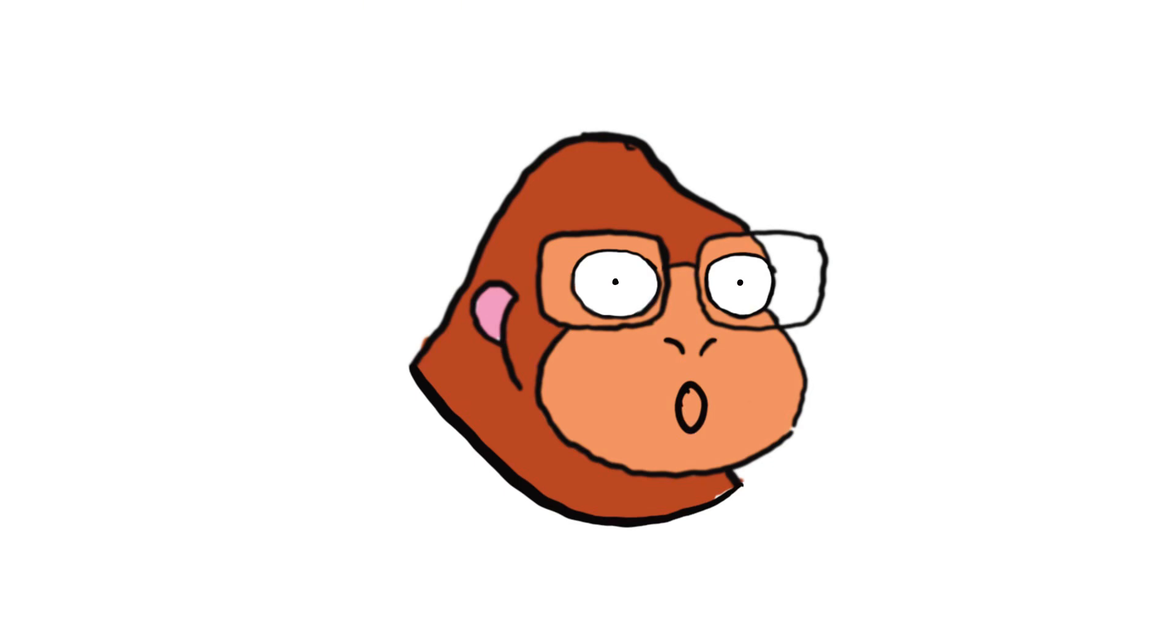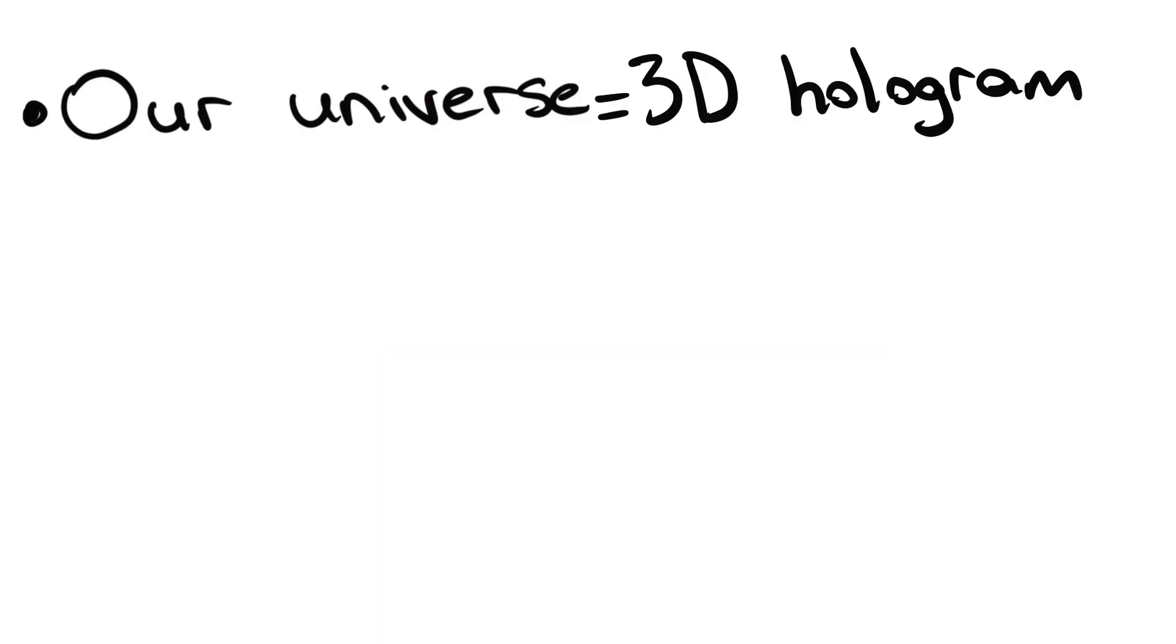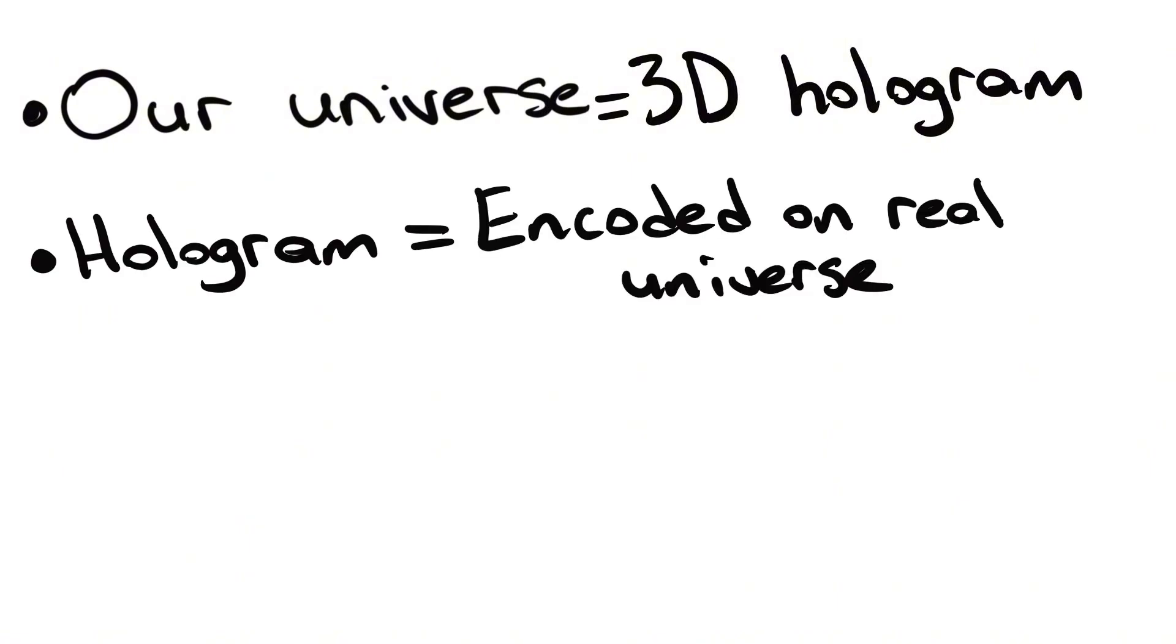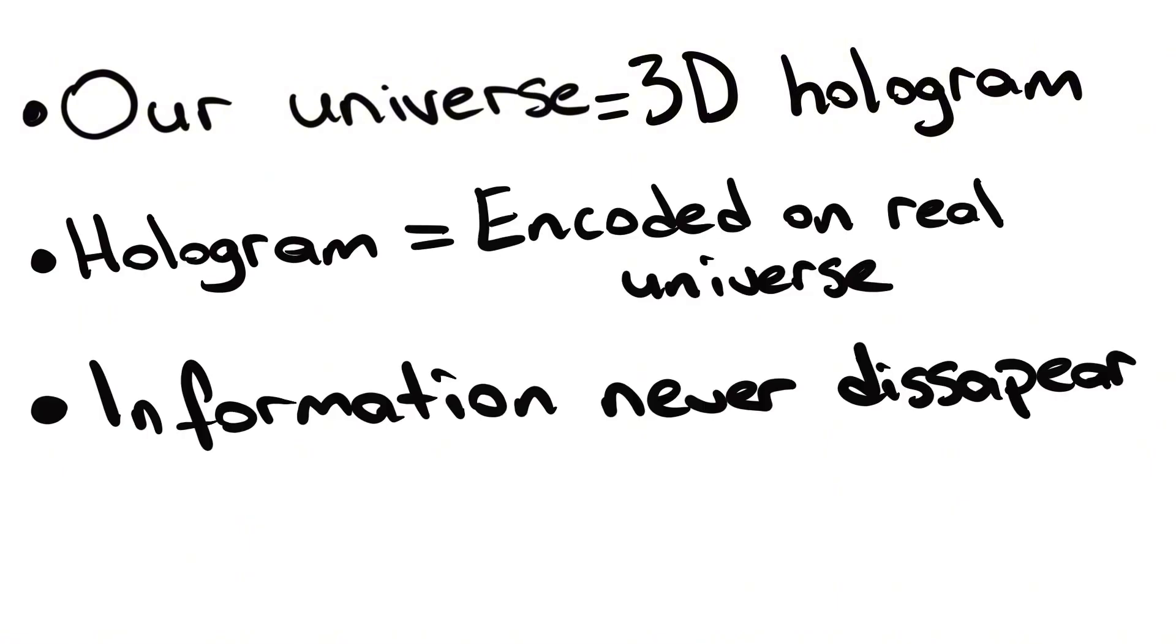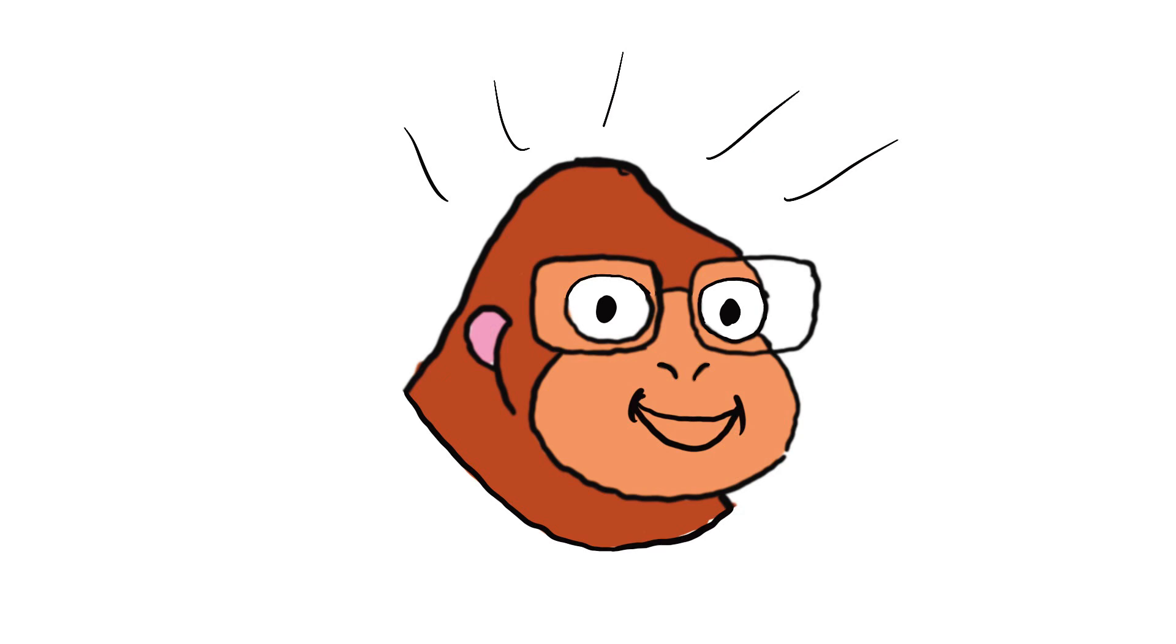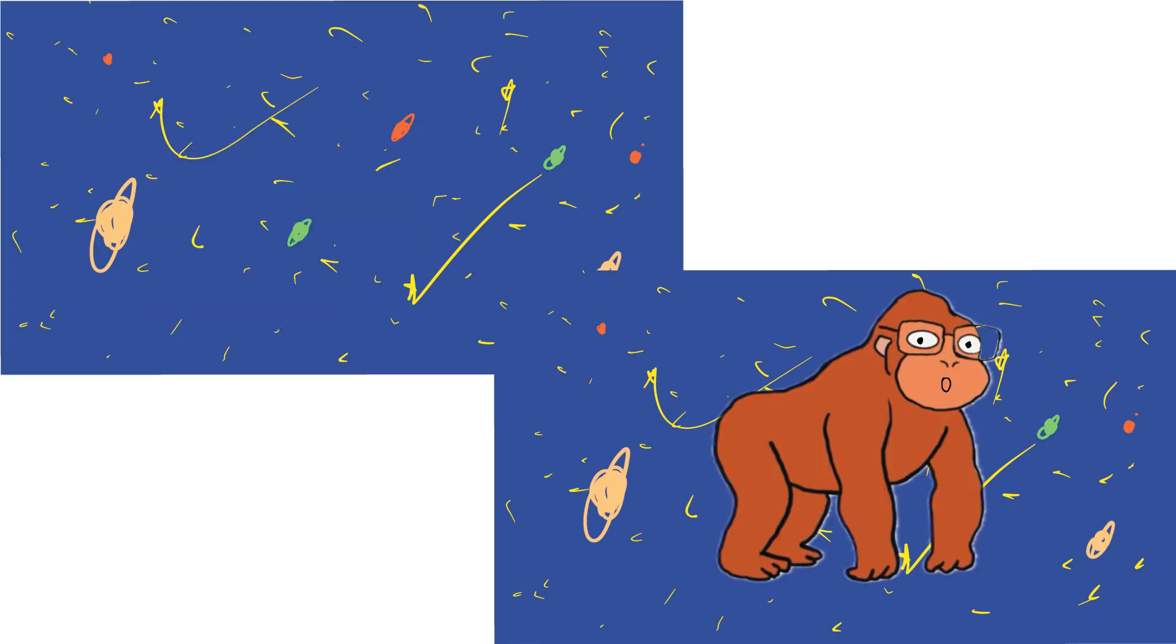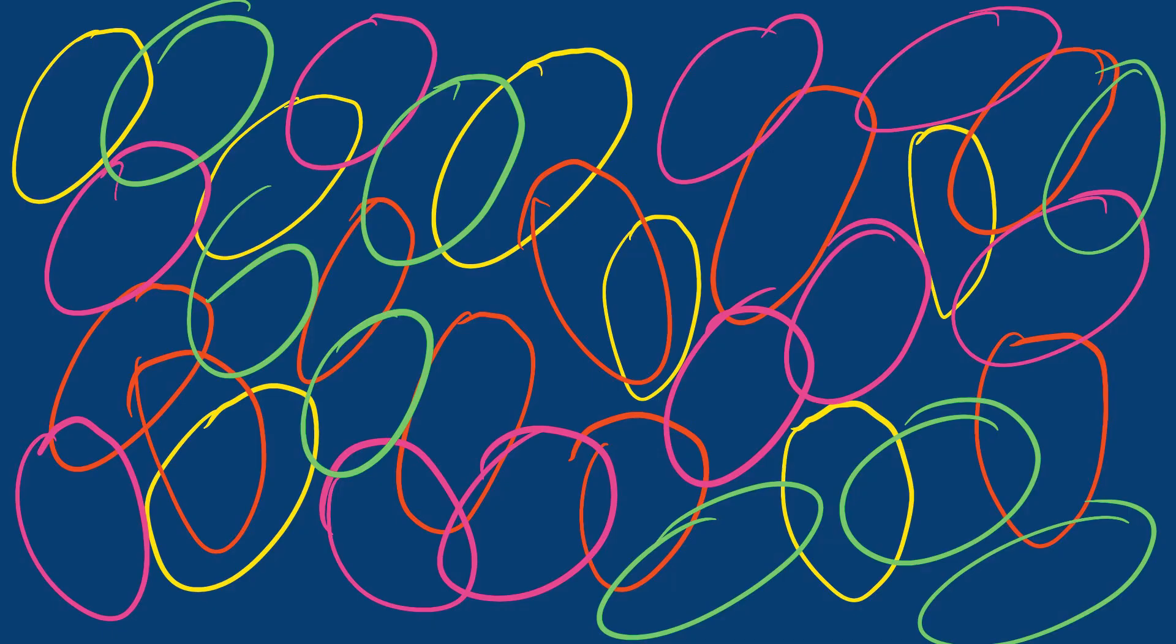Monkey was impressed. Monkey took notes. Our universe equals three-dimensional hologram. Hologram equals encoded onto the real universe. Information never disappears. Irregularities in the CMB equals evidence for the hologram. Monkey really liked the idea of parallel universes. Monkey will learn about a theory that suggests the possibility of passing to other universes. Like the string theory.